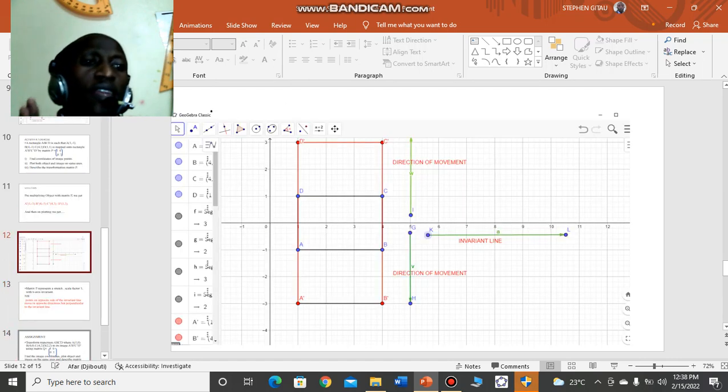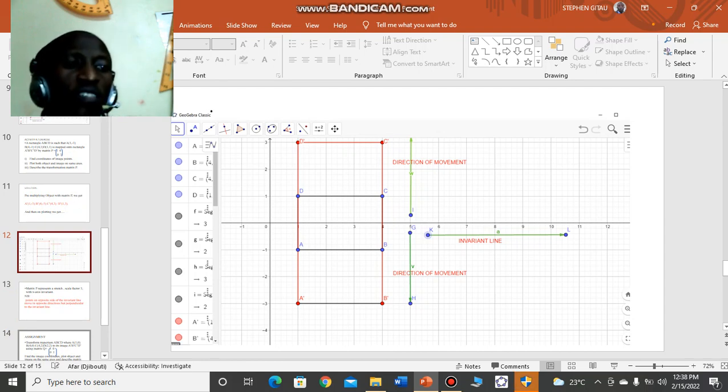If you look at point A, it has moved downwards. The direction of movement is down, while D moves up. We are still maintaining the invariant line being horizontal, x-axis.